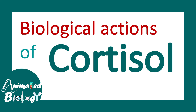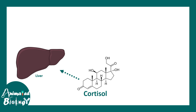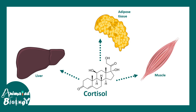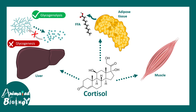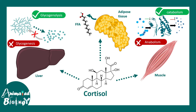Let's talk about the biological actions of cortisol in more detail. Cortisol can act on various tissues — majorly the liver, adipose tissue, and muscle. In the liver, cortisol ensures that glycogenolysis takes place, increasing glucose levels in the blood, and it also prevents the formation of glycogen from glucose. In adipose tissue, cortisol ensures that fatty acids are freed up from fat and can be utilized to generate energy. In muscles, it breaks down proteins to form peptides. In short, it activates catabolic responses and suppresses anabolism.